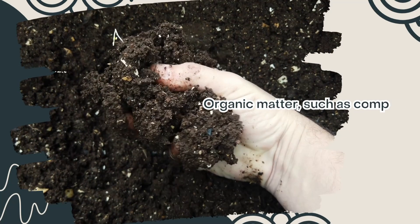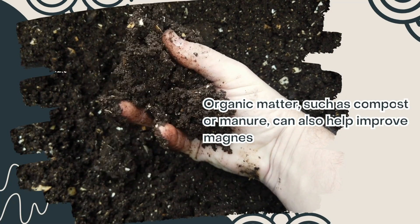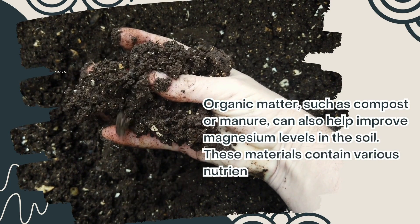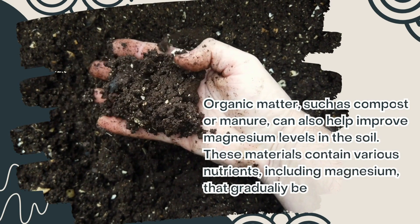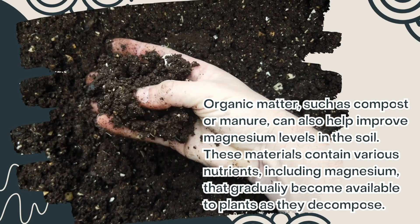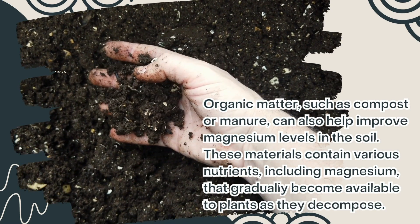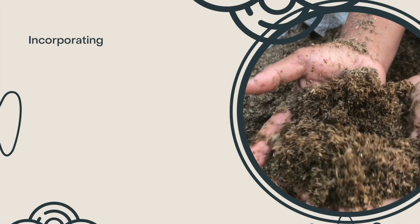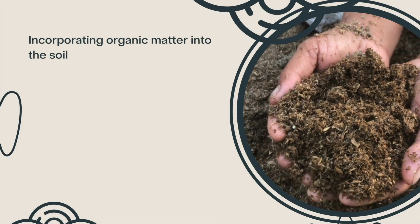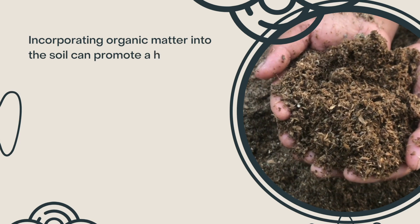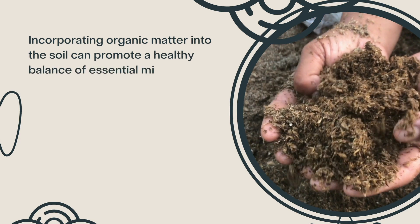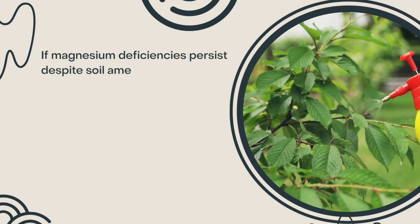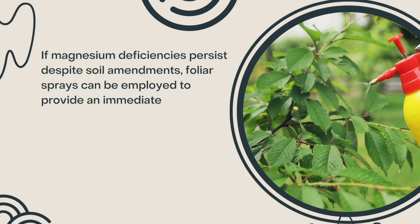Organic matter, such as compost or manure, can also help improve magnesium levels in the soil. These materials contain various nutrients, including magnesium, that gradually become available to plants as they decompose. Incorporating organic matter into the soil can promote a healthy balance of essential minerals, including magnesium.